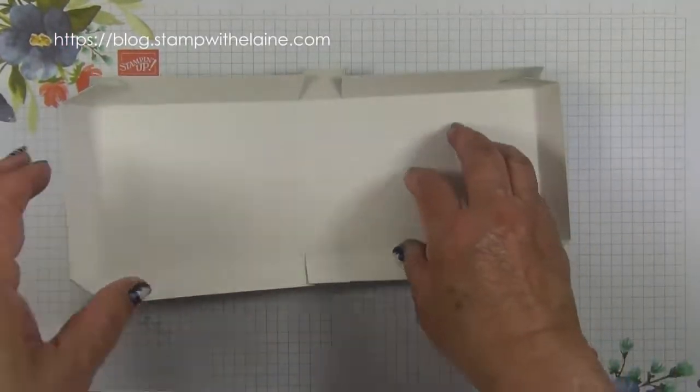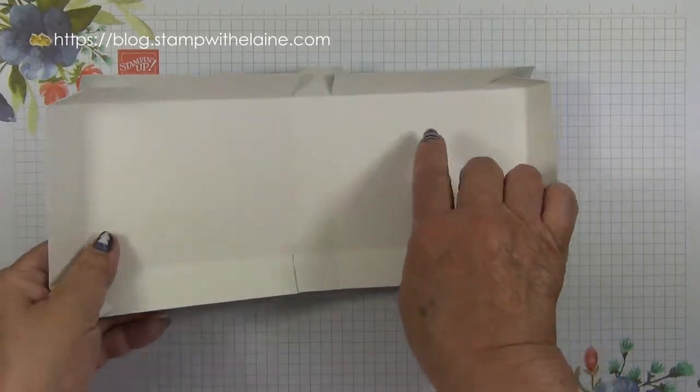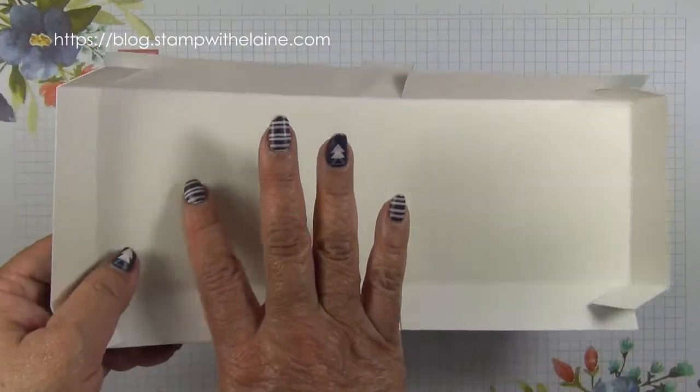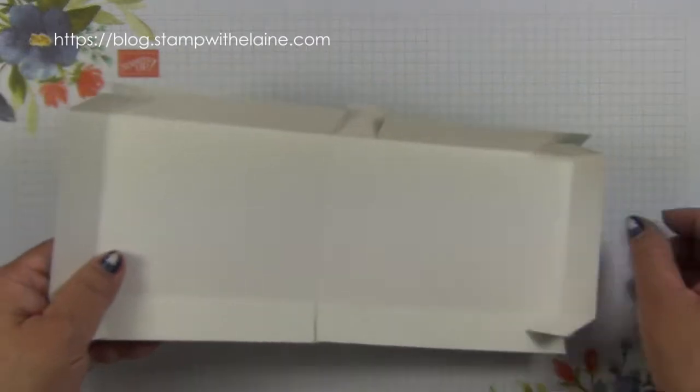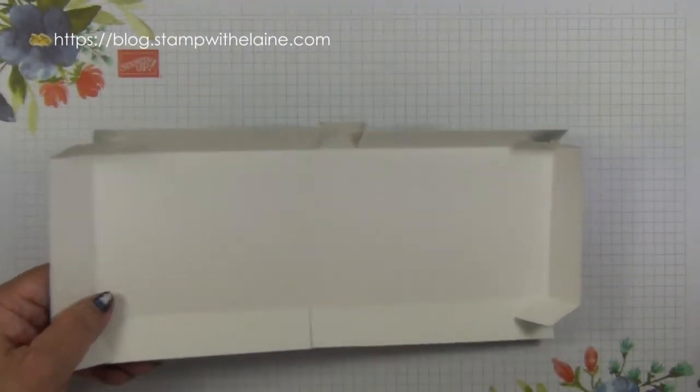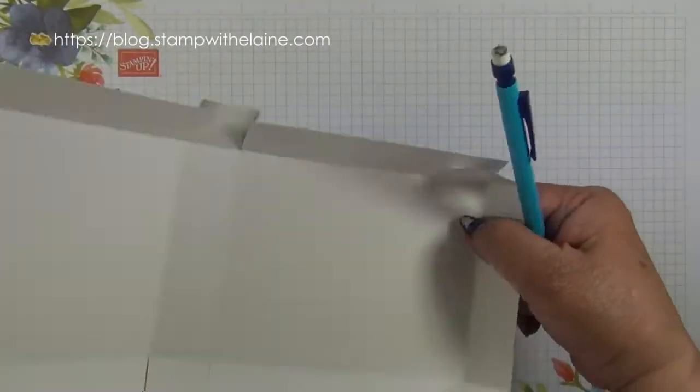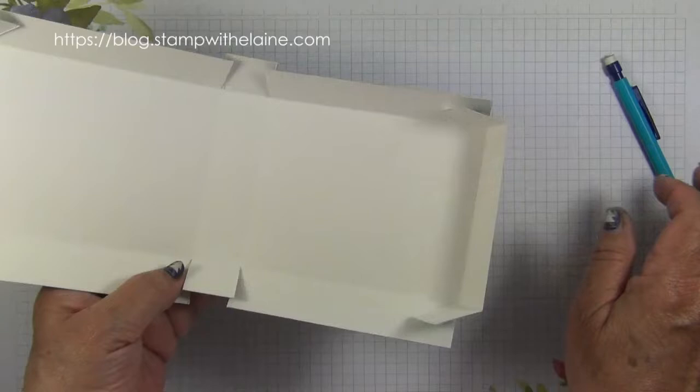Now you need to remember which side was the shorter side and which side is the 5 and 9/16 side, because that side will be the lid and this will be the bottom.